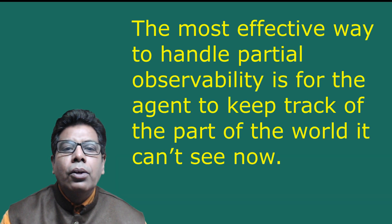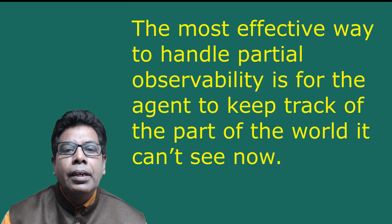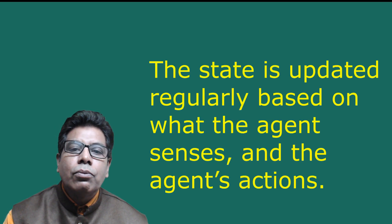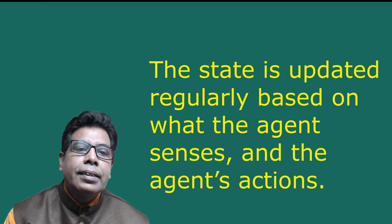The most effective way to handle partial observability is for the agent to keep track of the part of the world it can't see. The agent should maintain some sort of internal state that depends on the percept history and thereby reflects at least some of the unobserved aspects of the current state. The state is updated regularly based on what the agent senses and the agent's action. Keeping track of the state requires that the agent has knowledge about how the world evolves and how the agent's actions affect the world.